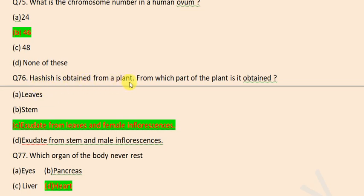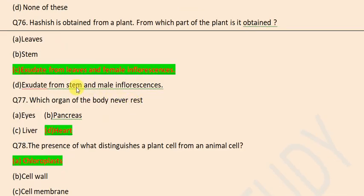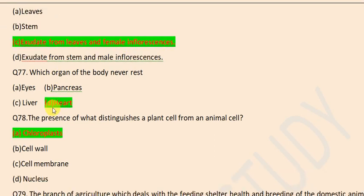Hashish is obtained from a plant. From which part of the plant is it obtained? Exuded from leaves and female inflorescence. Which organ of body never rests? Heart.